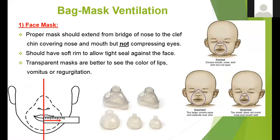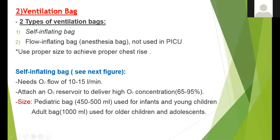We have different types, shapes, and sizes of masks. The proper mask should cover the bridge of the nose to the cleft of the chin, should not cover the eyes, and should not be too small or too big. It is better to choose a transparent mask so you can see the color of the lips and detect vomiting or regurgitation during bagging.